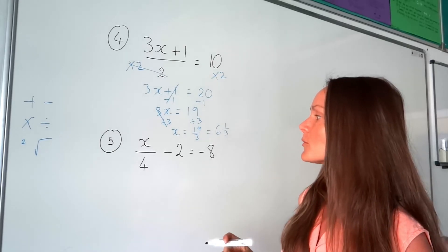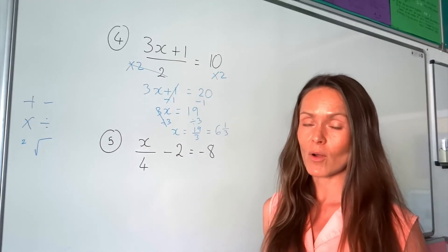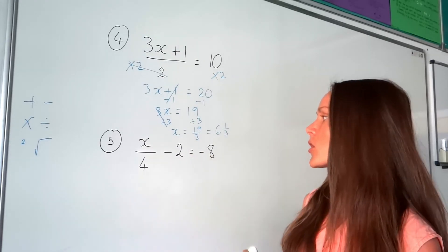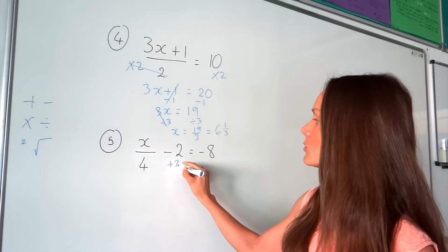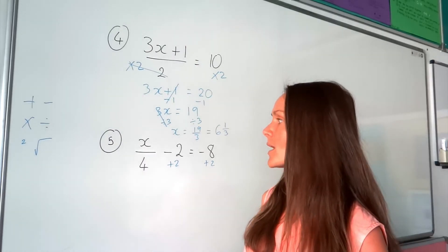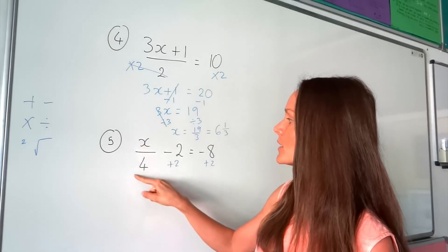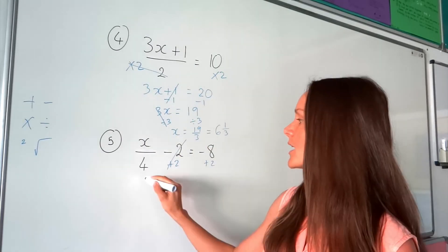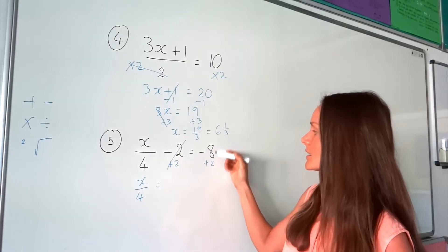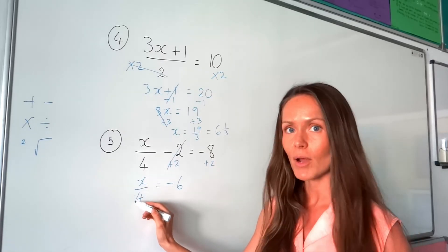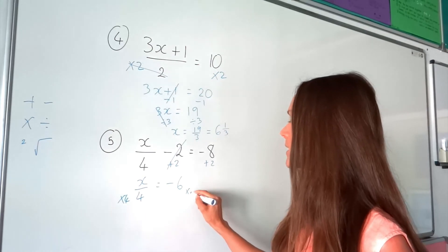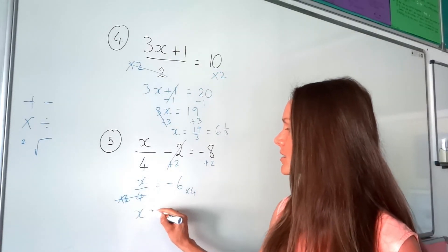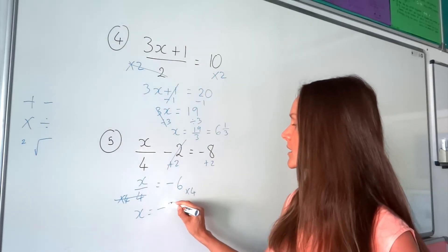In number 5, it's a little different because we have a fraction and a separate number. There's more than one way to do this — lots of people multiply by 4, but they forget to multiply the other term by 4 as well. So I'd start by adding 2 on both sides instead. Always leave whatever's closest to the letter until the end. Doing the opposite here cancels that term, and I'm left with x over 4. On the right-hand side, that gives me negative 6. Now the opposite of dividing by 4 is to multiply by 4 — remember to do the same on both sides. It cancels, leaving x, and on the right-hand side, negative 6 times 4 is negative 24.